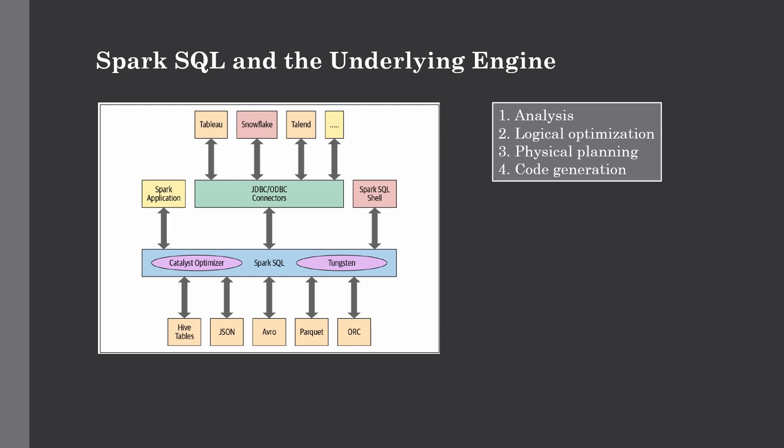This is very important. Let's take a deep dive and understand what is called the Catalyst optimizer. This Catalyst optimizer takes the computational query and converts it into an efficient execution plan. It goes through different transformations as given here: the first phase is analysis, then logical optimization, then physical planning, and code generation. These are the stages in Catalyst optimizer.